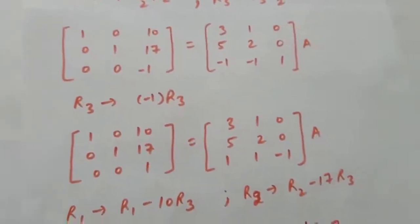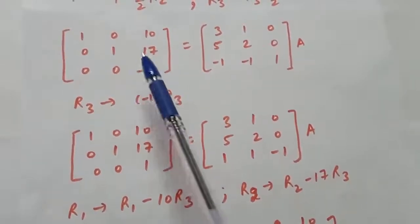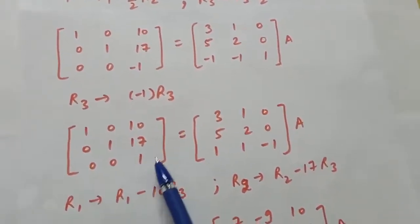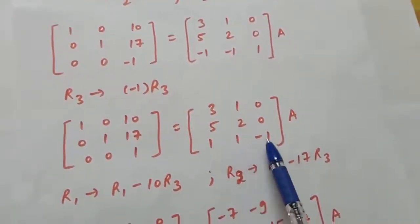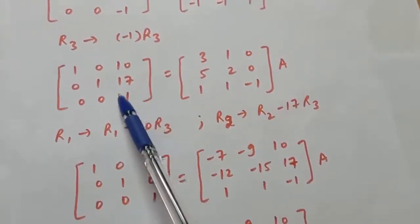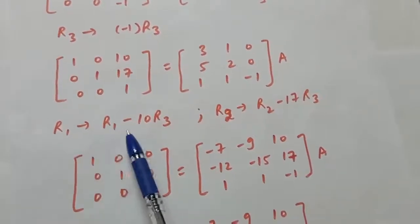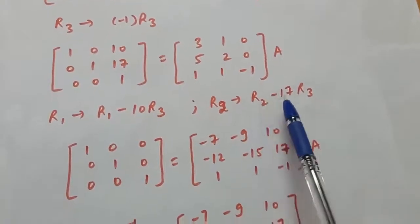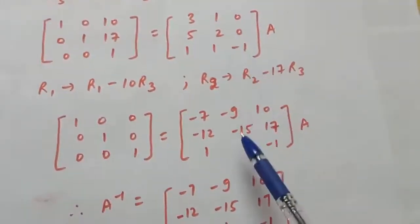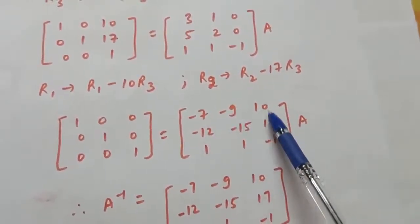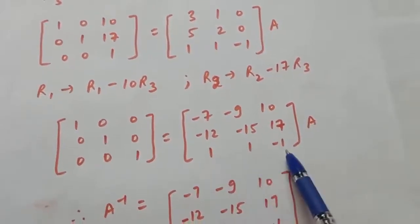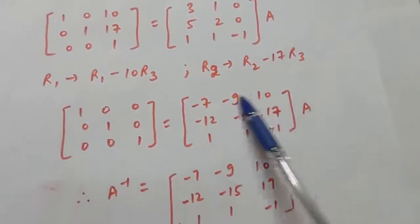Moving to the third column, make the (3,3) element 1 by multiplying row 3 by -1, giving [0, 0, 1] with right side [1, 1, -1]. Then eliminate entries above: row 1 → row 1 - 10×row 3, and row 2 → row 2 - 17×row 3. The left side becomes the identity matrix, and the right side gives A inverse = [-7, -9, 10; -12, -15, 17; 1, 1, -1].